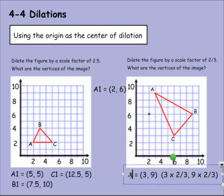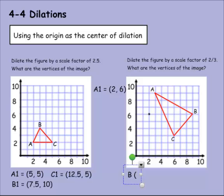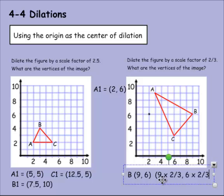Now let's solve for B. B's coordinates are 9 and 6. We multiply that times 2 thirds. 9 times 2 is 18, divided by 3 is 6. 6 times 2 is 12, divided by 3 is 4. So 6 and 4 would be my B1 coordinate.